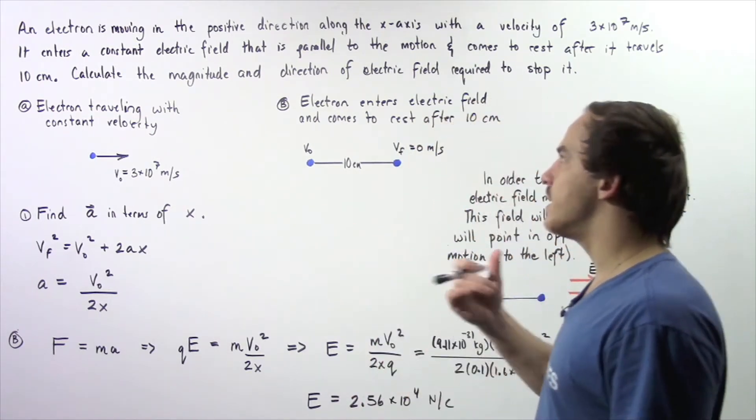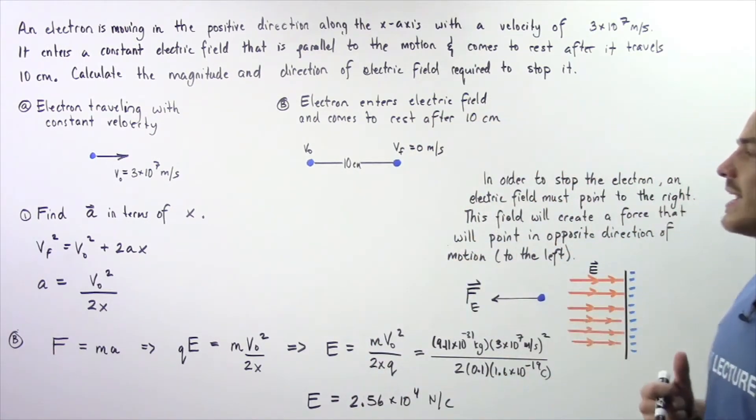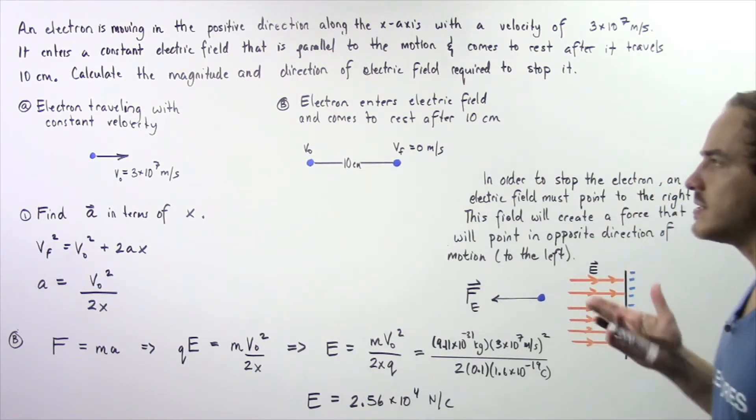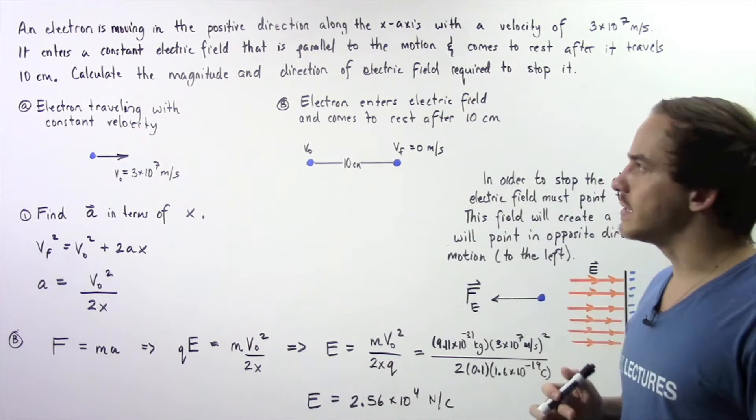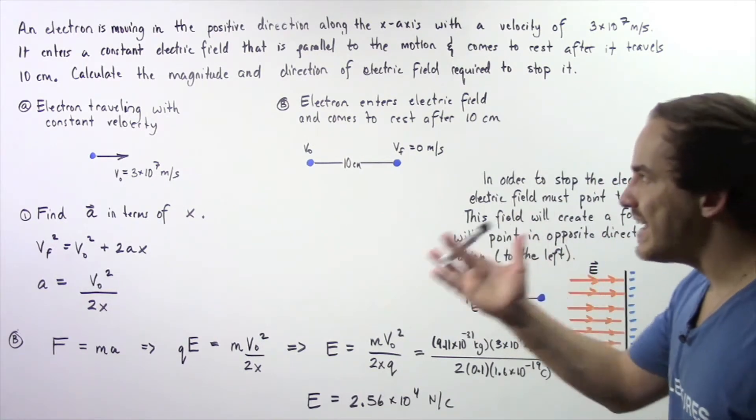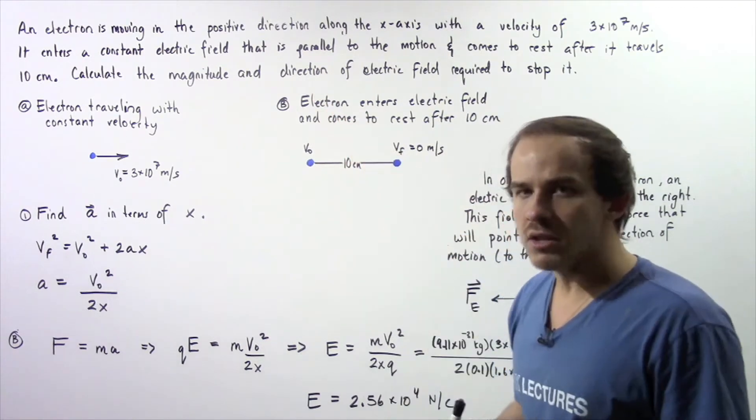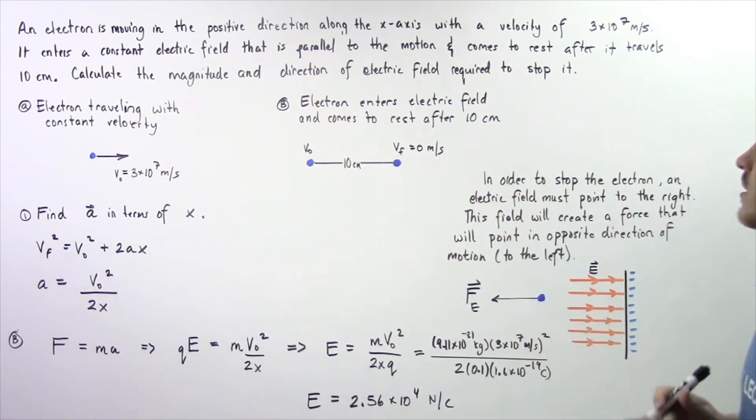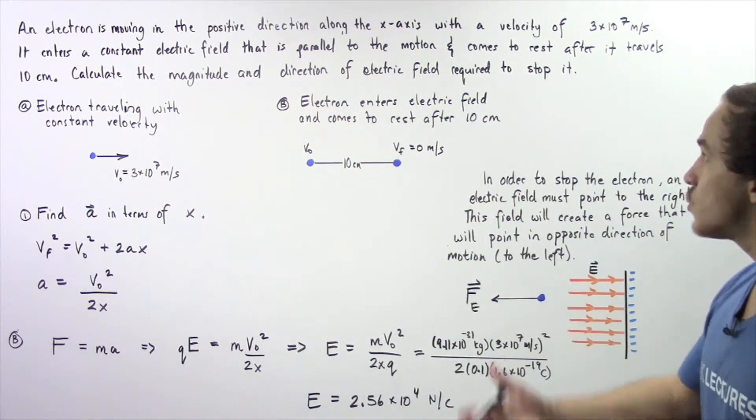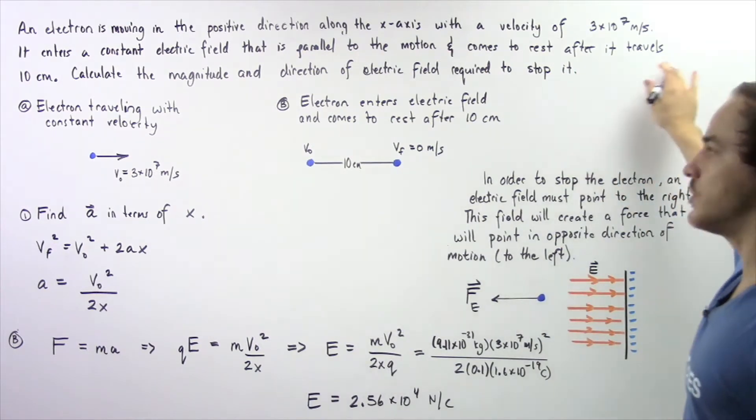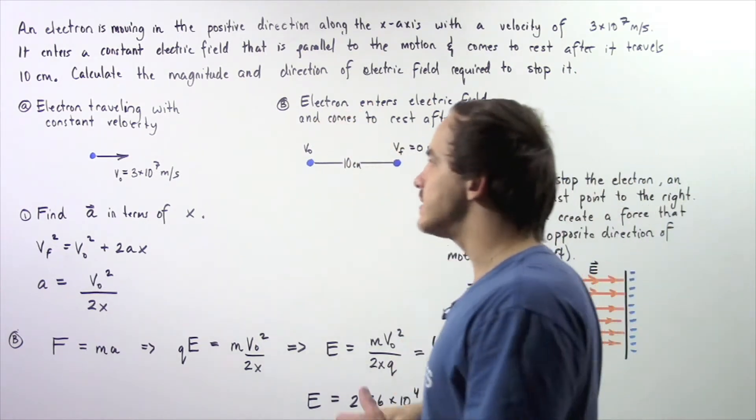An electron is moving in the positive direction along the x-axis with a constant velocity of 3×10^7 meters per second. The electron then enters a constant electric field that is parallel to the motion of that electron and comes to rest after traveling 10 more centimeters.